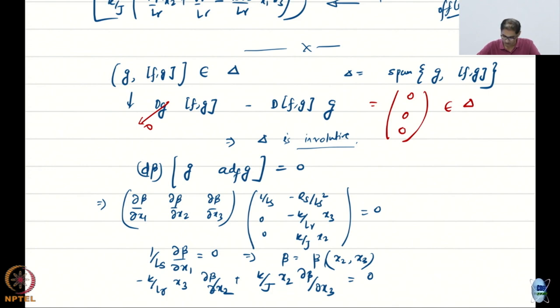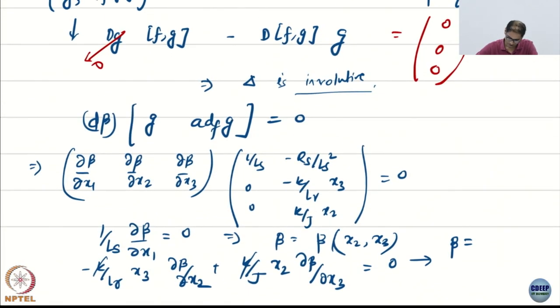So I am going to simply write minus klr x3 del beta del x2 plus kj x2 del beta del x3 equal to zero. The k goes away. So I have some condition. How do I go forward now? You can guess. What do you think I should have beta?